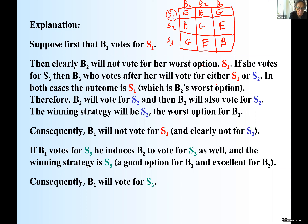If B2 votes S3, then B3 is not going to vote S3 either, because S3 will win and it's worse for him. If B2 votes S3, then B3 will vote either S1 or S2. In both cases, S1 wins. If B3 votes S2 and B2 voted S3, no majority — B1 voted S1, so S1 wins. If B3 votes S1, S1 has a majority and again wins. So if B2 goes for S3, S1 for sure wins.